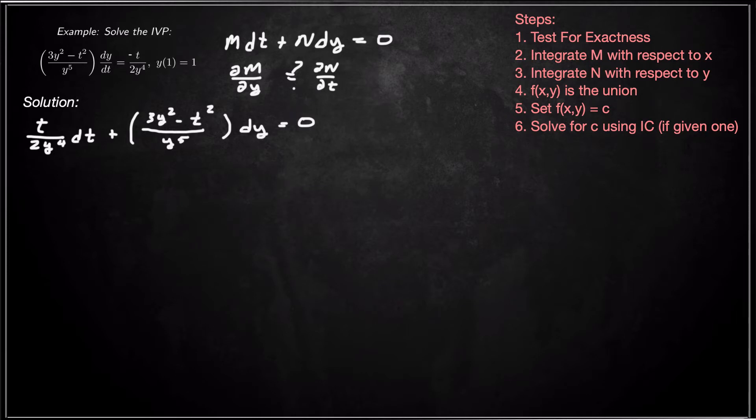Well, you might be tempted to multiply also by y to the fifth, but actually that removes the exactness. It's like the integrating factor that you needed to multiply to make it exact. So if you were to multiply by y⁵, you would actually end up with a non-exact equation. So we're going to leave it with y⁵ in the denominator.